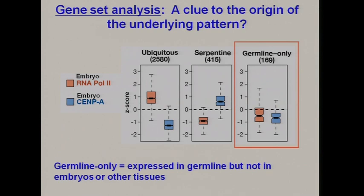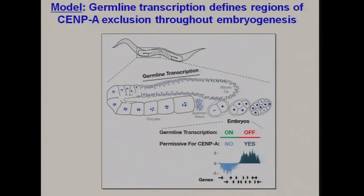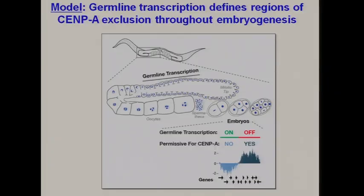Looking at different categories of genes, for ubiquitously expressed genes we saw the typical relationship: lots of RNA-POL2 means little CENP-A. But there was one class of genes where you didn't have RNA-POL2 in the embryo and also didn't have CENP-A — genes expressed only in the germline and not in embryos. This was a clue to what was happening. Germline-only genes showed no polymerase in the embryo and also no CENP-A, creating doubly negative regions.